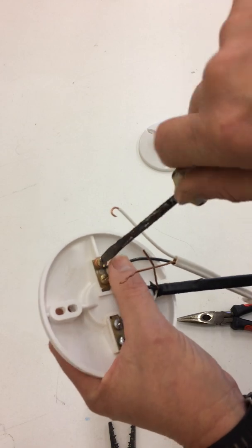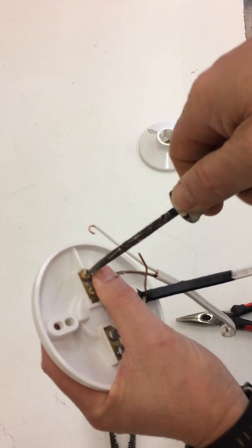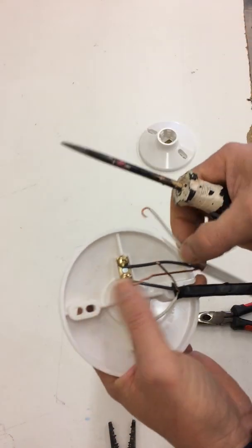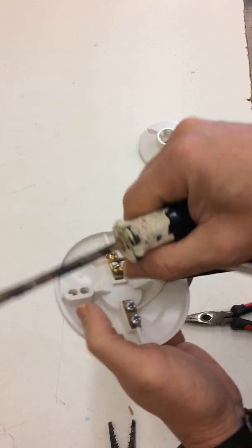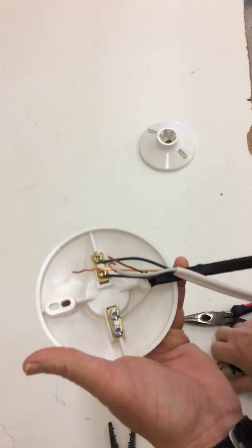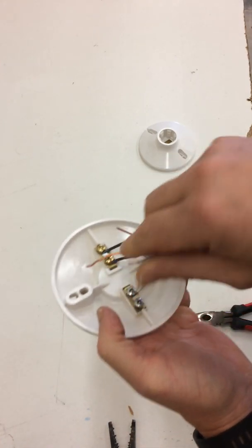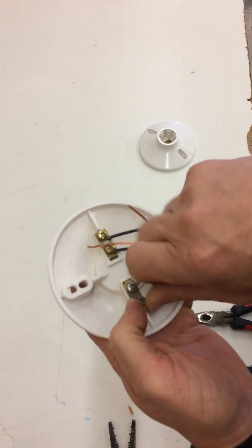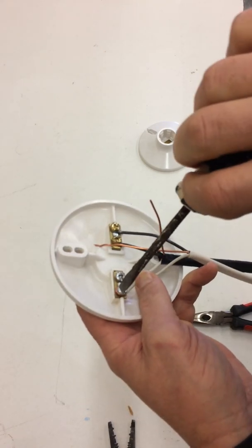Hot wire on the hot side. Kind of bend it around so it goes clockwise. Neutral wire on the neutral side and tighten.